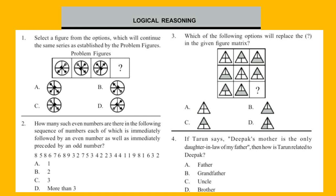Question 1: Select a figure from the options which will continue the same series as established by the problem figures. Look at the problem figures and select your answer. Question 2: How many such even numbers are there in the following sequence of numbers, each of which is immediately followed by an even number as well as immediately preceded by an odd number?